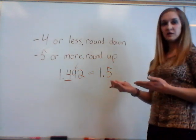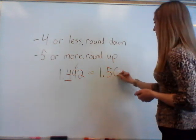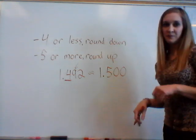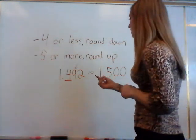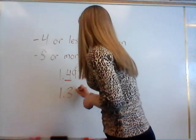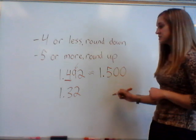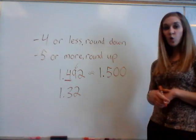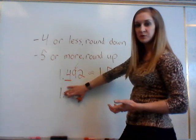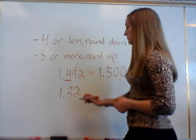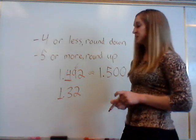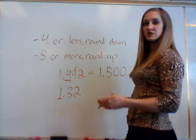The digits behind the number that we rounded to become zeros — in this case, we could also just leave them out. Another example is one and thirty-two hundredths. If we want to round to the nearest whole number, that means no decimal. I'm going to round to the nearest ones place and look at the digit to the right.